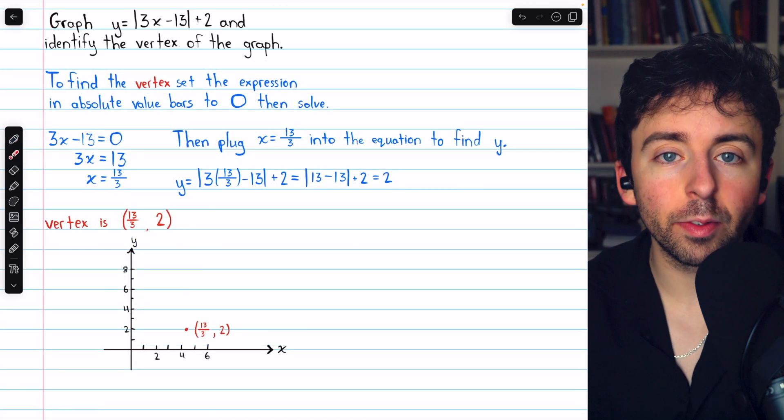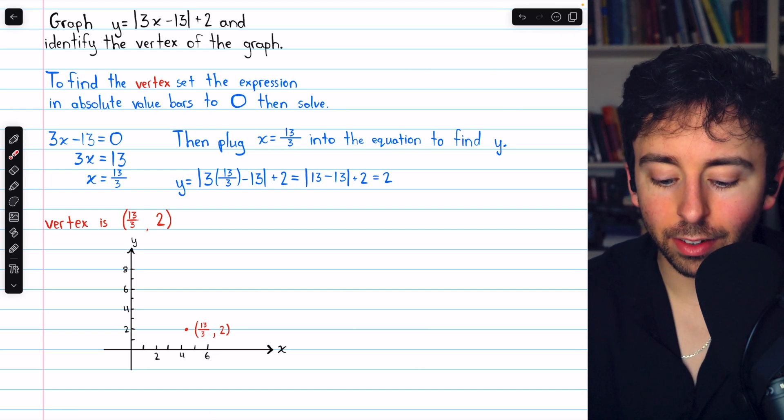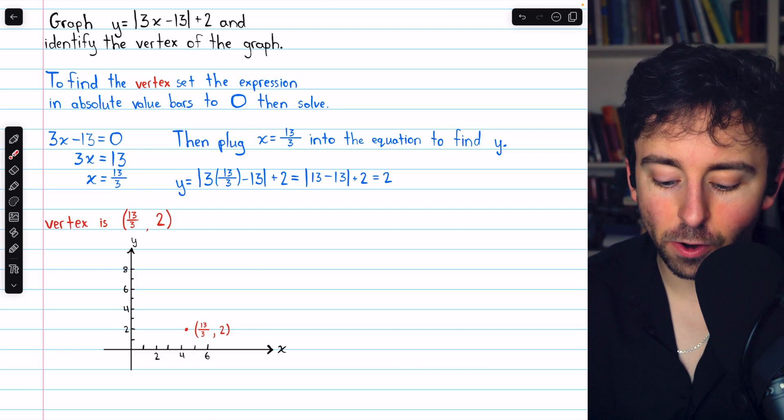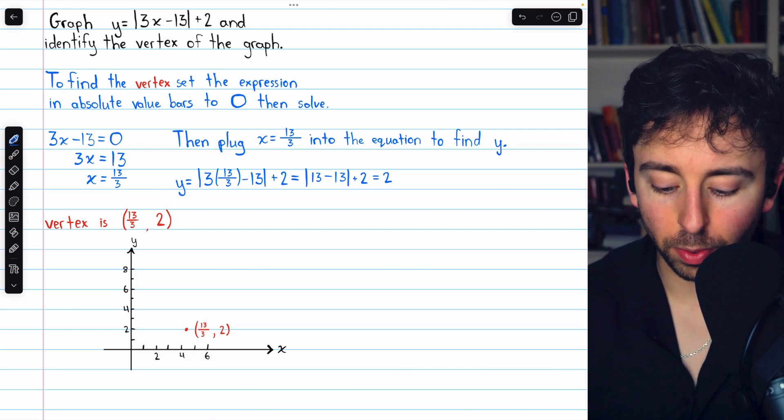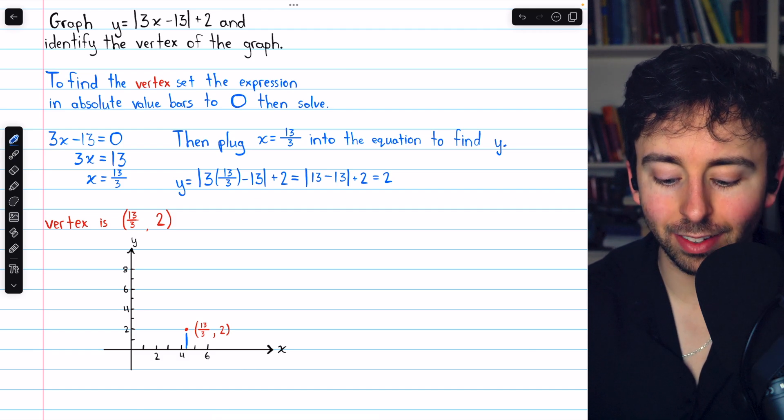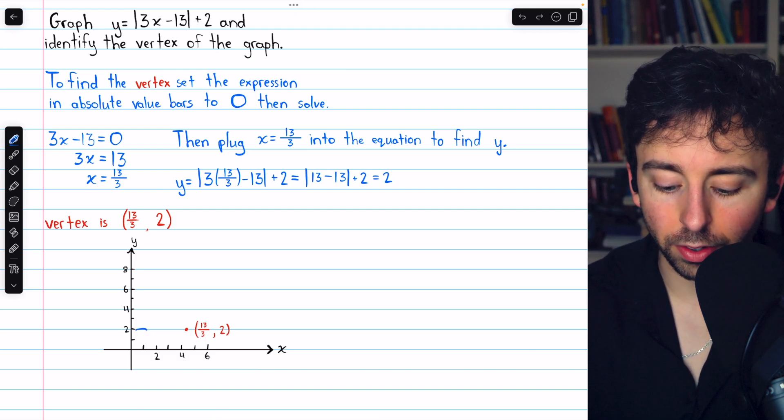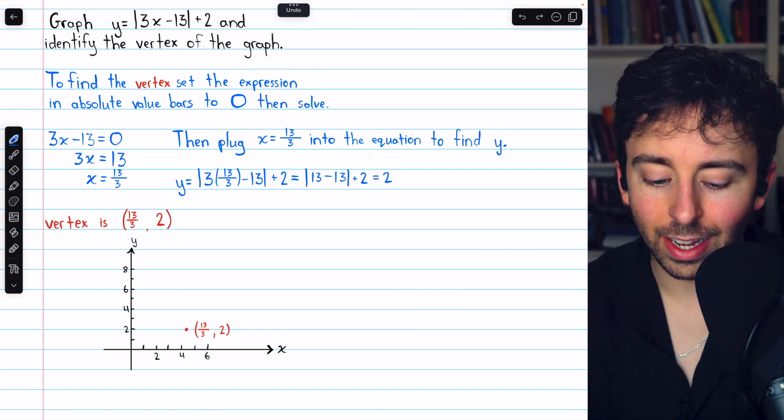Then we could begin our graph. We know the coordinates of the vertex are 13/3, 2. And so we could plot that here. 13/3 is 4 and 1/3. So you can see its horizontal position is just a little bit past x = 4. And of course, its y-coordinate, as we just calculated, is 2.